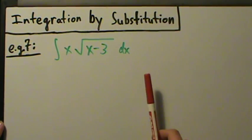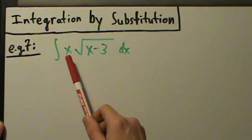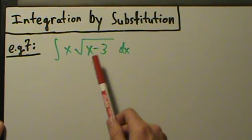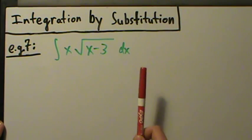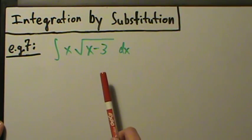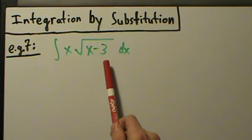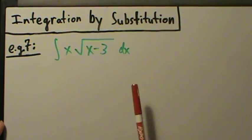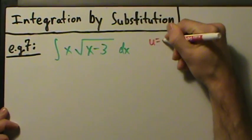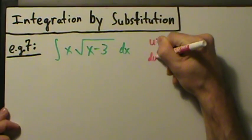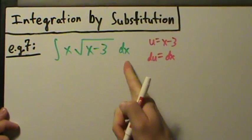When we look for functions and their derivatives here, we have an x and then inside of that a square root of x minus 3. If you look for a function and its derivative, you could say, well, here's x minus 3. The derivative of that would just be 1. So if we say u equals x minus 3, then du would just be dx.